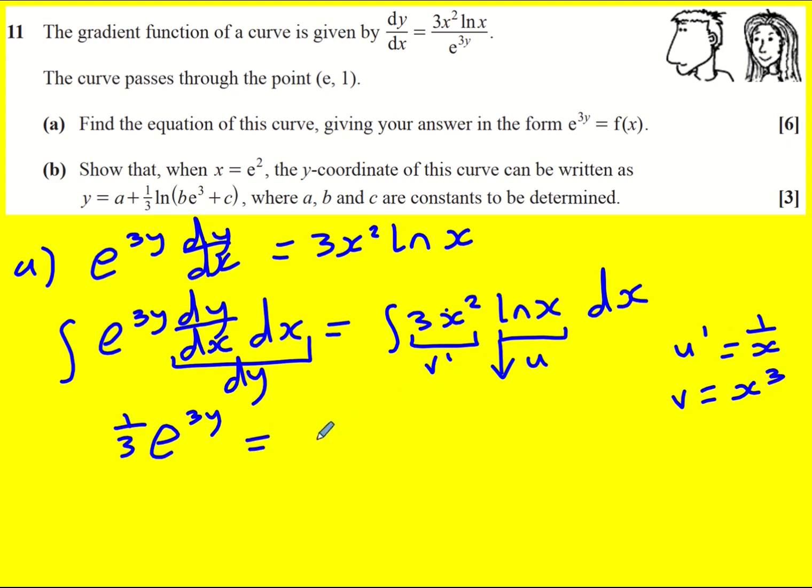The formula is uv minus the integral of u dash v dx. So it's going to equal x cubed ln x minus the integral of 1 over x times x cubed, so that's just x squared. So we get x cubed ln x minus, integrate this, one third x cubed and at this point I'll bring my plus c in.